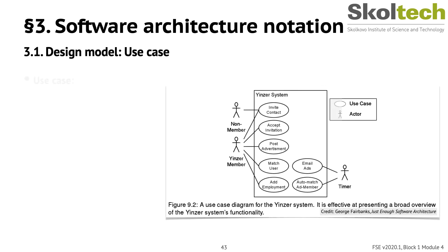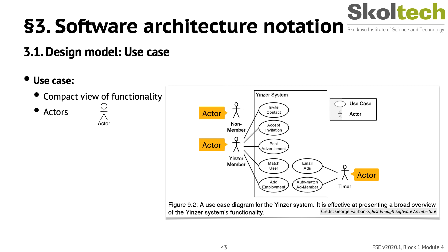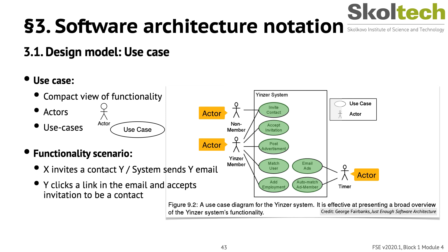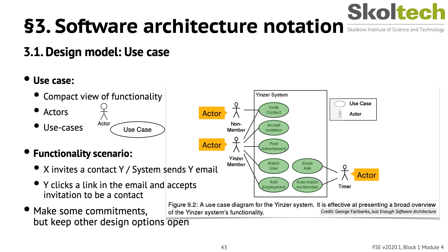The UML use case diagram provides a compact graphical overview of the functionality of the system and the actors and systems that interact with it. This figure shows a job advertisement system with several use cases and member, non-member, and timer actors. The timer actor is special, indicating that some use cases run at particular times each day as system-internal jobs. Use cases are high-level functional descriptions, like inviting a contact or accepting an invitation. Use case diagrams show what the system can do but give only limited detail; functionality scenarios are commonly used to elaborate on what happens when, for example, a user clicks 'invite contact.'